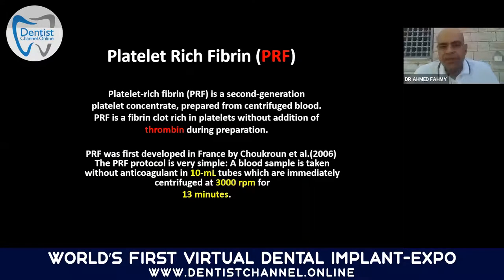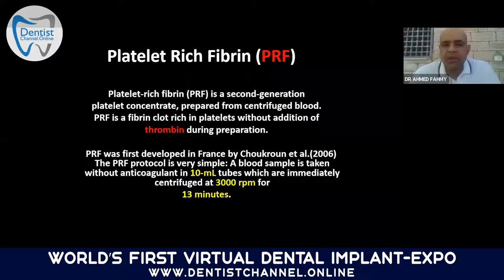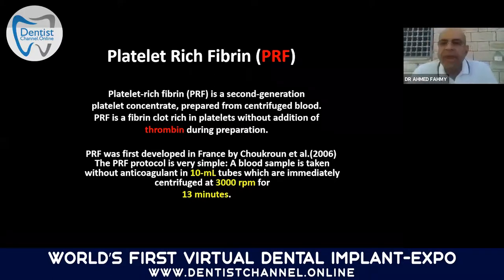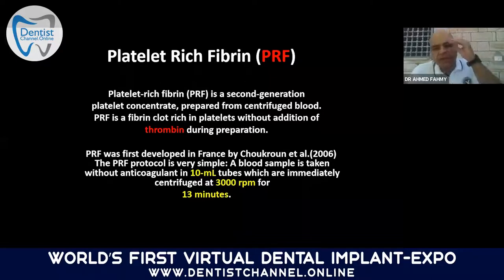PRF — platelet-rich fibrin — is a second-generation platelet concentration. The first generation is PRP. PRF is prepared from centrifuged blood without anticoagulant. The difference between PRF and PRP is that PRP blood is collected in a tube with anticoagulant and thrombin, while PRF blood is collected in a plain tube — meaning no thrombin. PRF was first developed in France by Choukroun in 2006.